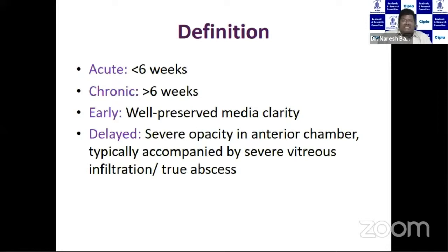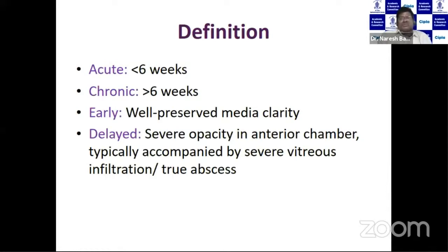In case of early endophthalmitis, usually we'll have well-preserved media clarity. But in case of delayed endophthalmitis, there'll be severe opacity in the anterior chamber, typically accompanied by severe vitreous infiltration with a true abscess in the vitreous cavity.